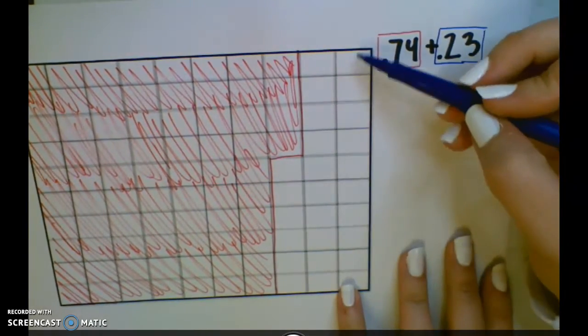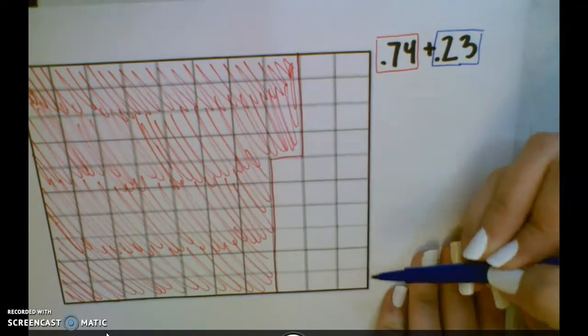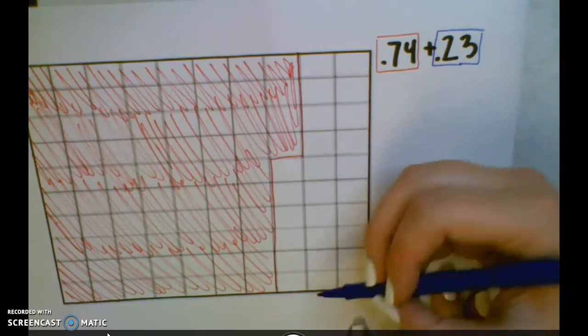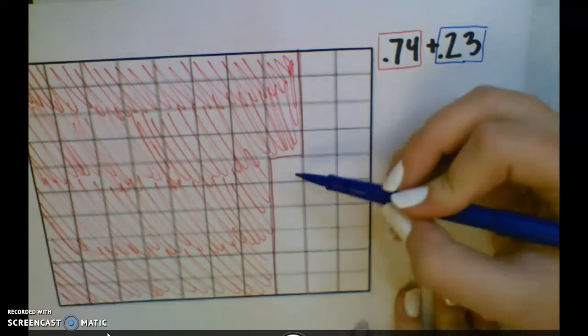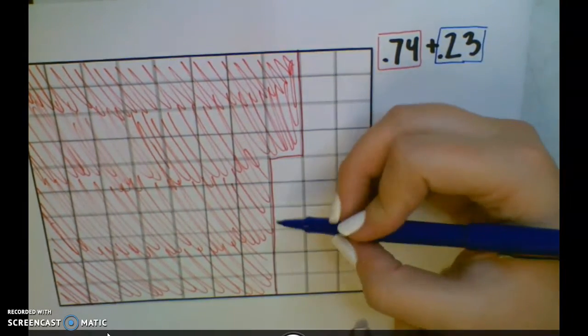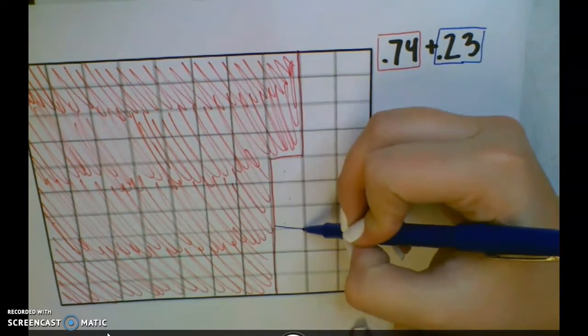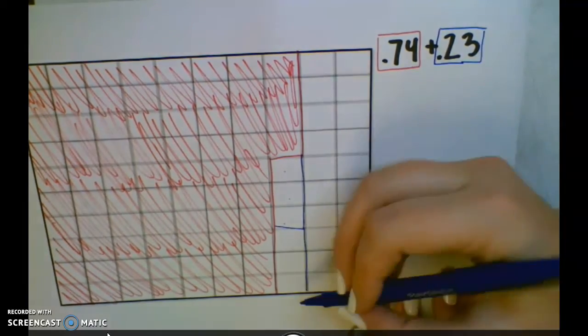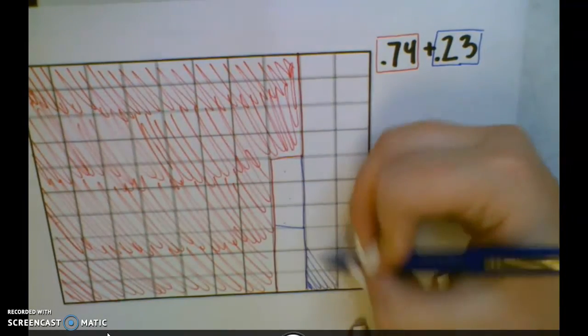So I know that two columns is twenty hundredths, or sorry, two tenths or twenty hundredths, and then I have one, two, three, so one, two, three, and then we have this over here, and I'm going to shade that.